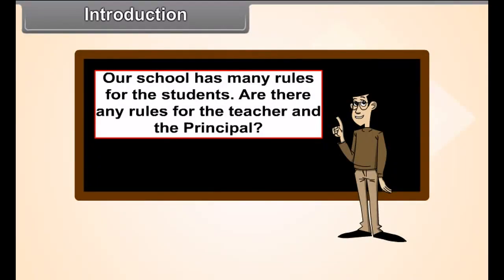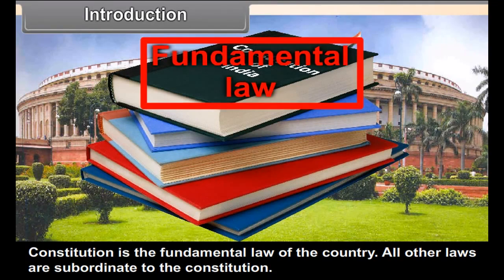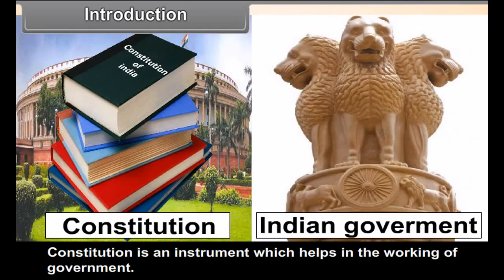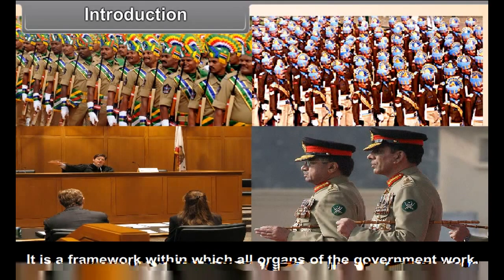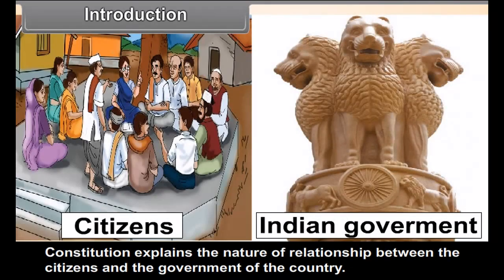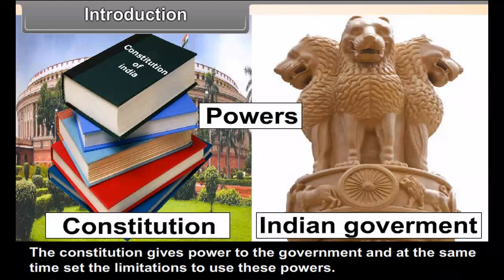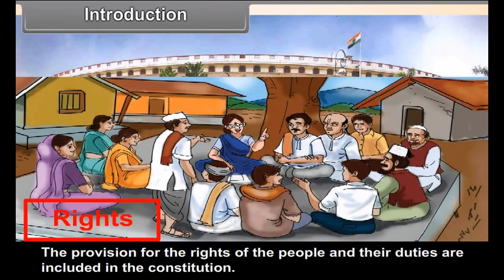Our school has many rules for students. Are there any rules for the teachers and the principal? What is a Constitution? Constitution is the fundamental law of the country — all other laws are subordinate to it. It is an instrument which helps in the working of government, a framework within which all organs of the government work. It defines the relationship between citizens and the government, as well as among citizens themselves. The Constitution gives powers to the government and, at the same time, sets limitations on the use of those powers, along with provisions for the rights and duties of the people.